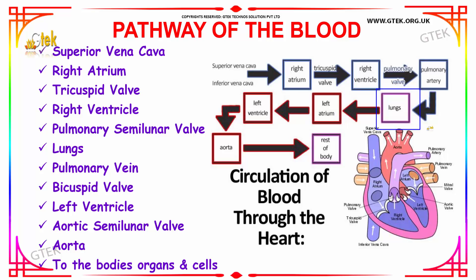In the lungs, the purification process takes place. The purified blood then returns through the pulmonary vein into the left atrium. Through the mitral valve — also known as the bicuspid valve — it enters the left ventricle. From the left ventricle, the purified blood is pumped through the aortic semilunar valve into the aorta.